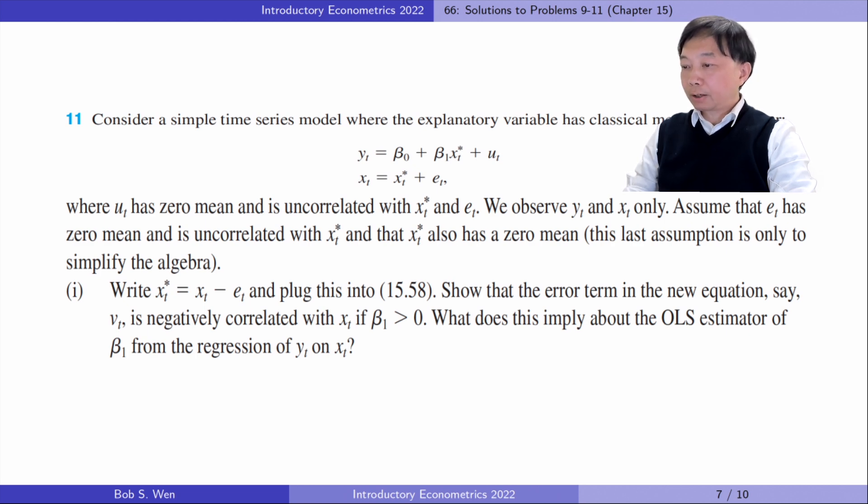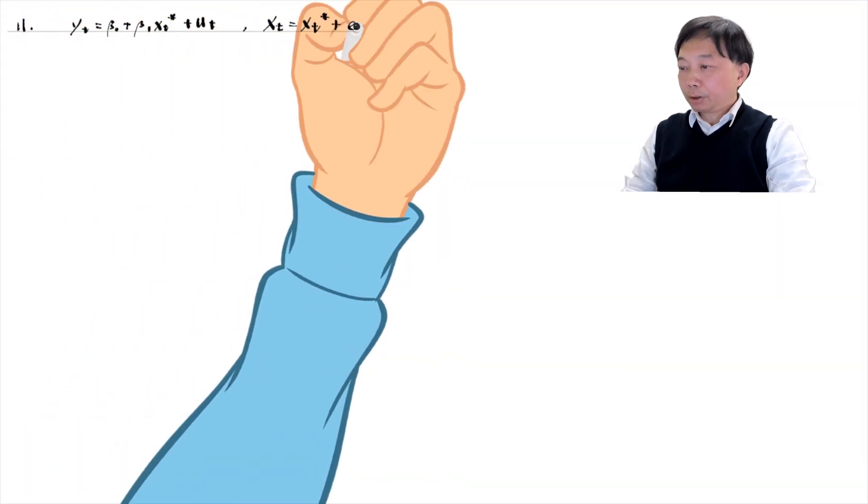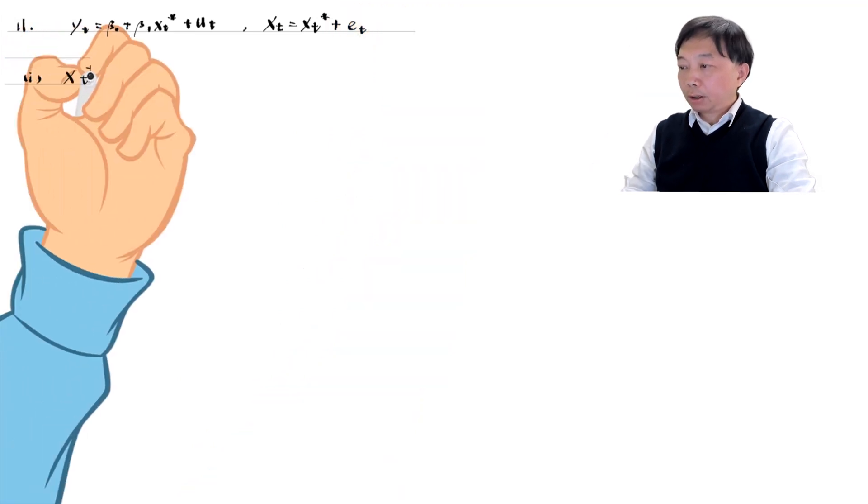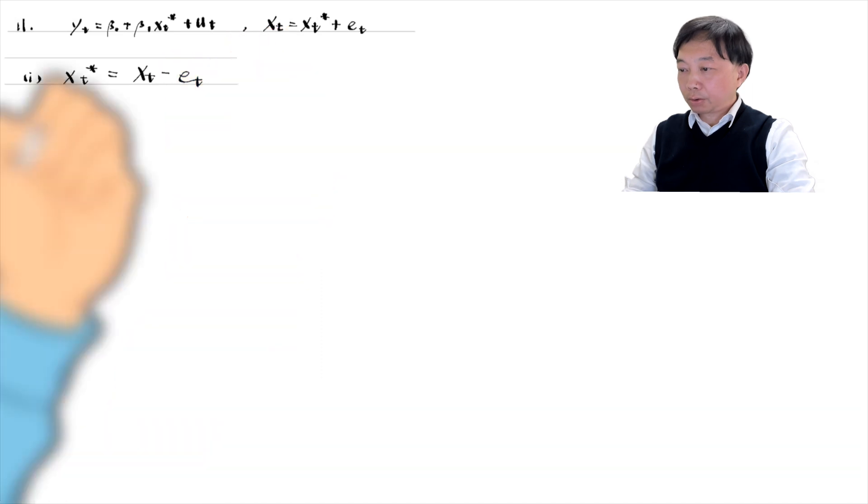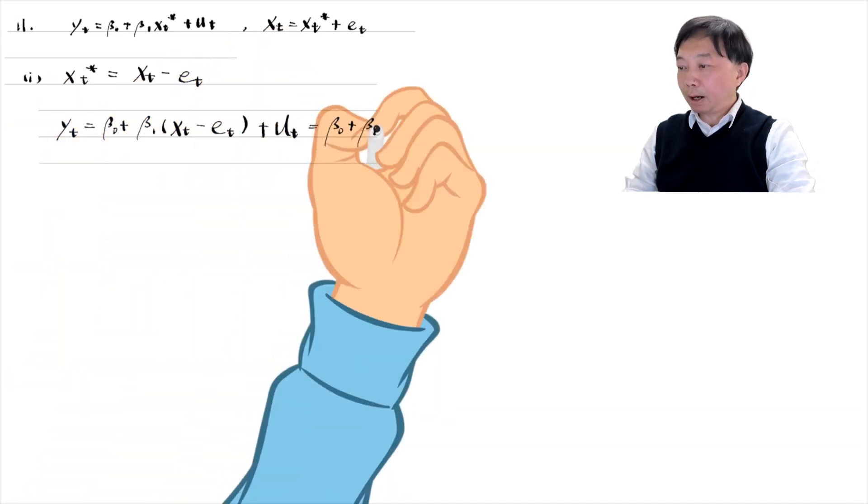In part 1, write xt star equals xt minus et and plug this into equation 15.58. Show that the error term in the new equation, say νt, is negatively correlated with xt if β1 is positive. What does this imply about the OLS estimator of β1 from the regression of yt on xt? We follow the steps and we can derive that the covariance between νt and xt equals minus β1 times sigma e squared.